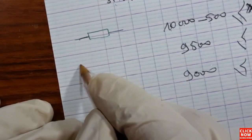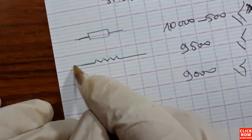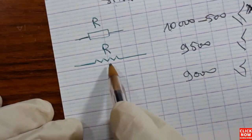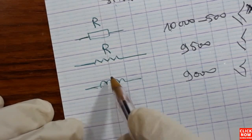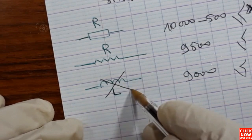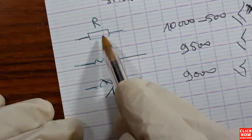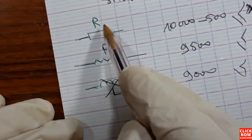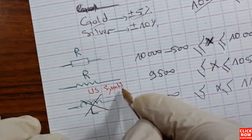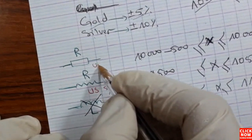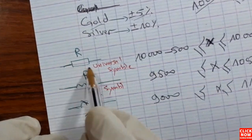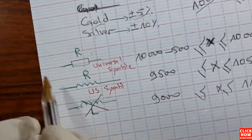Now I'll show you the symbols for resistors. There are two types. Be careful not to confuse the resistor symbol with the inductor symbol — L is for inductor and R is for resistor. The first symbol is a universal symbol, and the second is a USA symbol. Both symbols are correct and both represent the resistor.